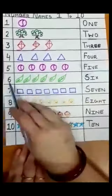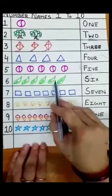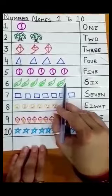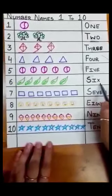Next line, six. Six is a numeral. These are leaves. One, two, three, four, five, six. Six leaves. The number name is S-I-X, six.